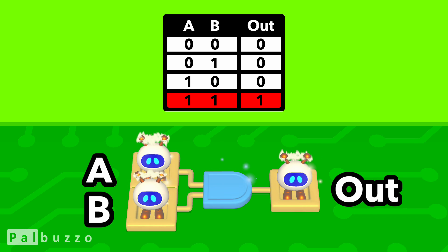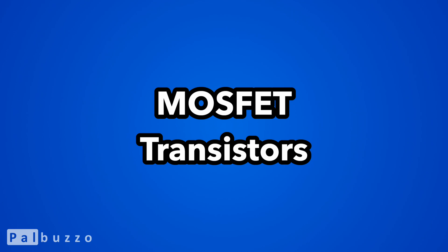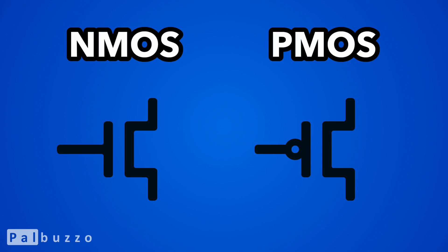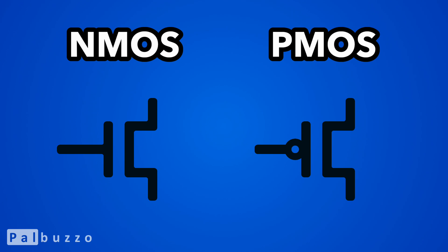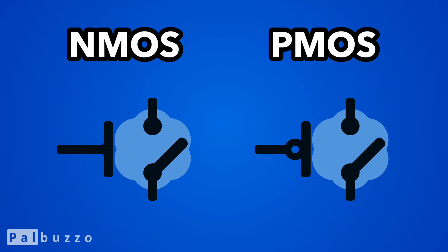Like all logic gates, AND gates can be built using transistors. One popular type of transistor is the MOSFET, especially enhancement mode MOSFETs. They come in two types: NMOS and PMOS. We can save the detailed discussion of these transistors for another video, but for the purposes of this video, we can think of them as being switches, which can either connect or disconnect different parts of our circuit.